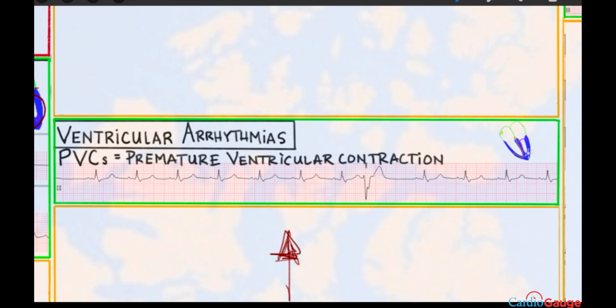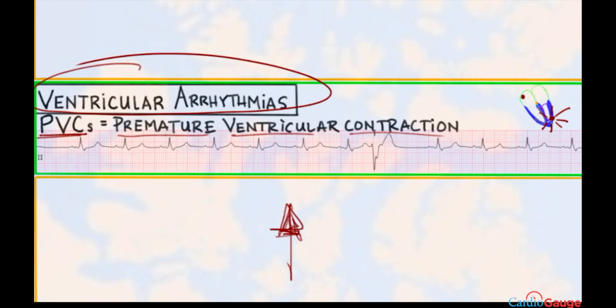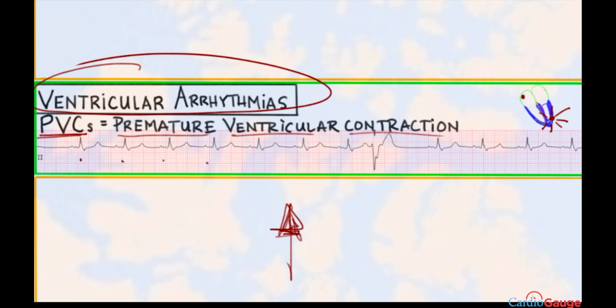Let's talk about ventricular arrhythmias — specifically PVCs, premature ventricular contractions, which come from the ventricle. A spot in the ventricle fires and creates the beat instead of the sinus node. You can see beats with a P wave before each QRS, and then suddenly there's no P wave — just a QRS that comes early. The QRS has a very different morphology than a sinus beat: it tends to be wider, and the T wave tends to be large and in the opposite direction. When the morphology of a beat is very different from the sinus beat, there's a good chance it's a PVC.